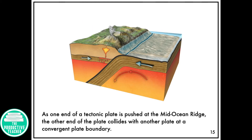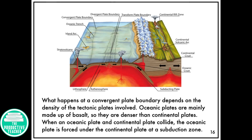As one end of a tectonic plate is pushed at the mid-ocean ridge, the other end of the plate collides with another plate at a convergent plate boundary. What happens at a convergent plate boundary depends on the density of the tectonic plates involved. Oceanic plates are mainly made up of basalt, so they are denser than continental plates. When an oceanic plate and a continental plate collide, the oceanic plate is forced under the continental plate at a subduction zone.